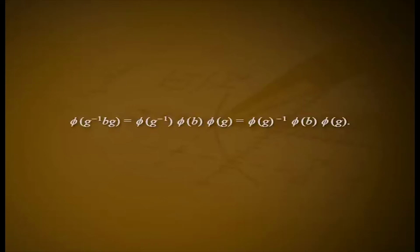If K dash is a normal subgroup of phi of G, then for B belonging to phi inverse of K dash and g in G, phi of g inverse·B·g equals phi of g inverse into phi of B into phi of g. Since phi of g belongs to G dash, phi of B belongs to K dash, and K dash is normal in G dash, we have phi of g inverse·phi of B·phi of g belongs to K dash. Hence phi of g inverse·B·g belongs to K dash, which implies g inverse·B·g belongs to phi inverse of K dash. Hence phi inverse of K dash is normal in G.